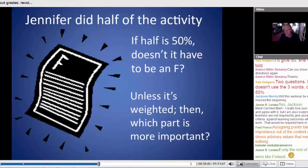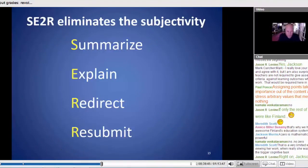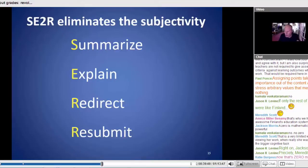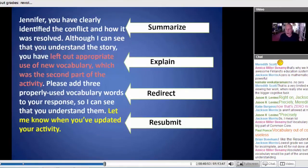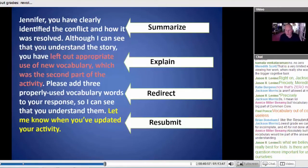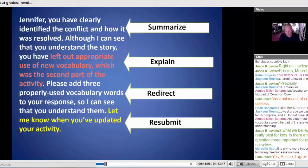So what I want to say then is let's move here, and this is some of what we've talked about. If she did half, and if we just say they're of equal value, if she did half, she has to get 50%, which is an F. So she has to get maybe 25. Although I've had people say, if you don't complete the activity, it's a zero. What happens with SE2R, and this is what I really want to come away with people understanding today, is that SE2R feedback eliminates subjectivity.